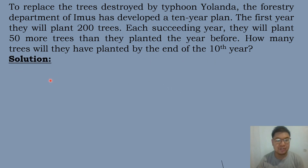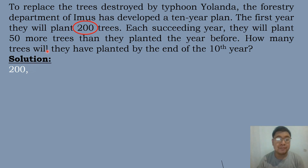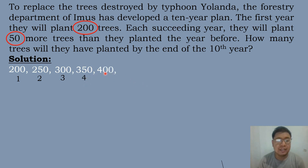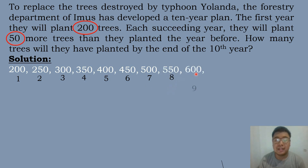Let's determine the given. We have 200 as the value of our first term. Each succeeding year they will plant 50 more trees, meaning we add 50: 200 plus 50 equals 250 for the second term. 250 plus 50 equals 300 for the third term. Adding another 50 gives 350 for the fourth term, 400 for the fifth, 450 for the sixth, then 500, 550, 600, and 650 for the tenth term.